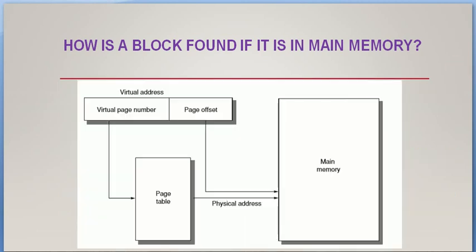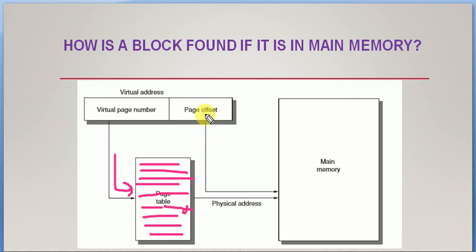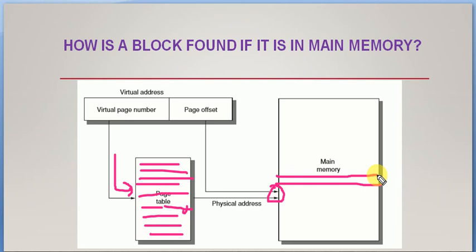In paging, the virtual address has a virtual page number and an offset. The virtual page number references the page table where all referred pages are stored. According to the virtual page number, a particular page table entry is found, which is considered the physical address. The page offset is then appended to get the particular portion of main memory, which is a page of fixed size. So the process is straightforward in paging.